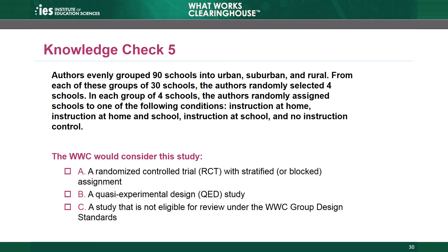Knowledge Check 5. Authors evenly grouped 90 schools into urban, suburban, and rural. From each of these groups of 30 schools, the authors randomly selected four schools. In each of the groups of four schools, the authors randomly assigned schools to one of the following conditions: instruction at home, instruction at home and school, instruction at school, and no instruction control. The WWC would consider this study: A, a randomized controlled trial with stratified or blocked assignment; B, a quasi-experimental design study; or C, a study not eligible for review under the WWC group design standards.